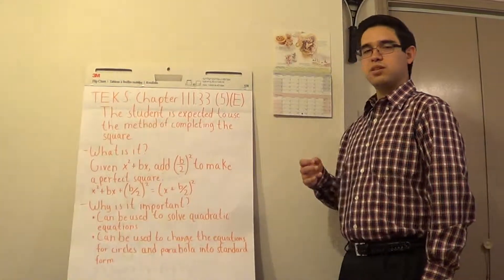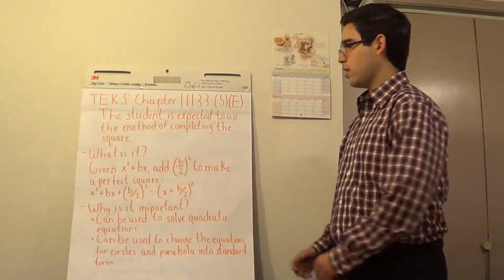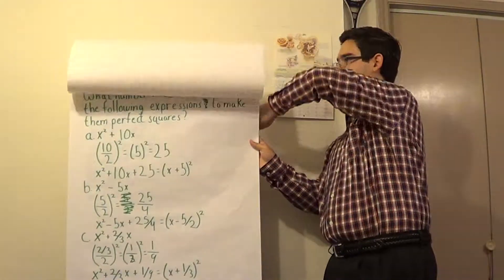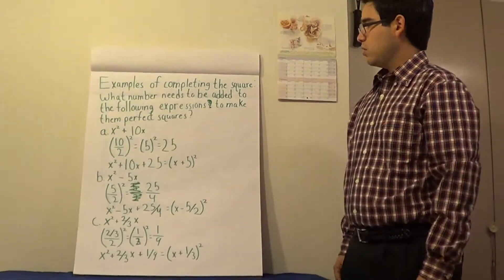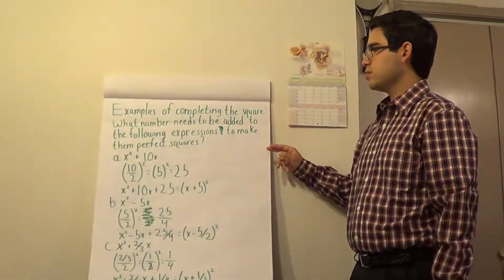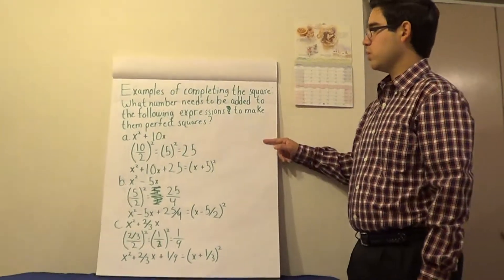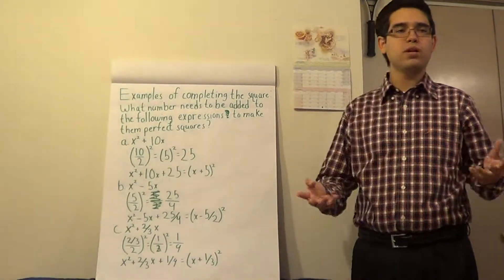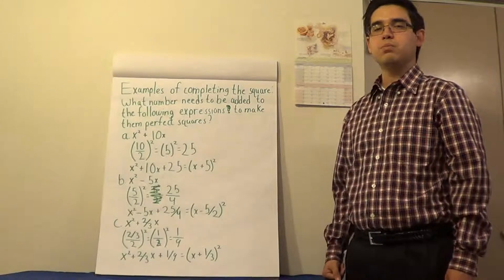Now let's go on to some examples of completing the square. What number needs to be added to the following expressions to make them perfect squares? Let's look at the first one, a: x squared plus 10x. What number can we add to this expression to make it a perfect square?